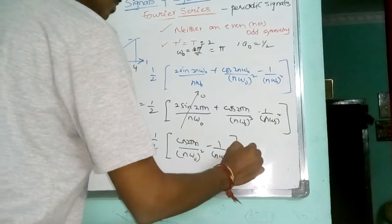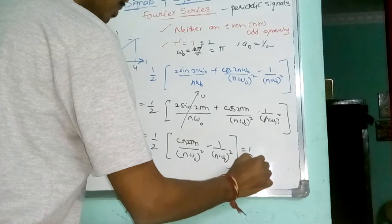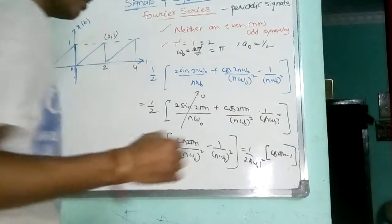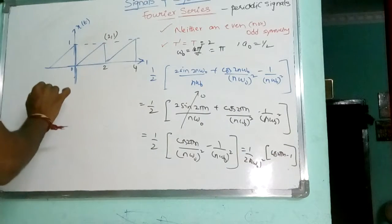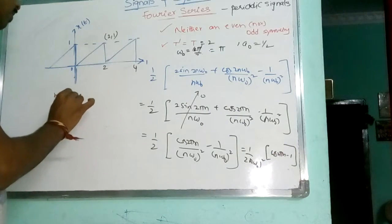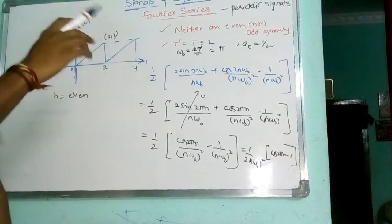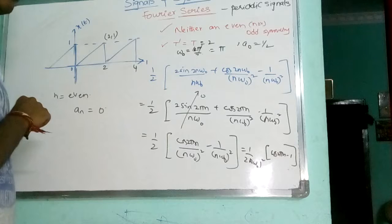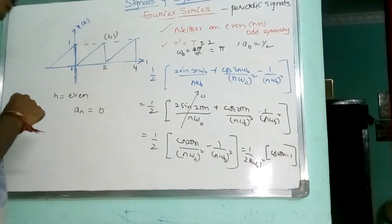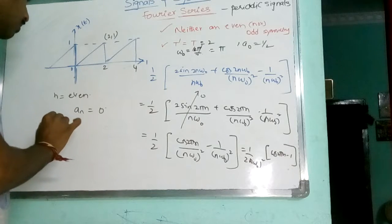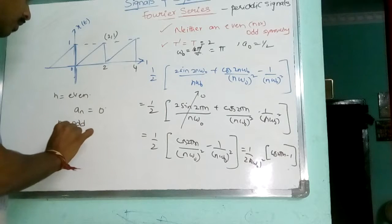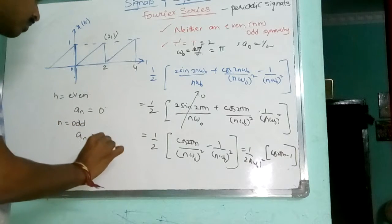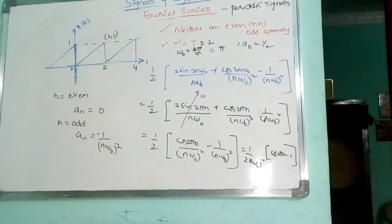So, 1 by 2 into cos 2 pi N by N omega naught whole square, minus 1 by N omega naught whole square. That means I can take: 1 by 2 N omega naught whole square, into cos 2 pi N minus 1. Whenever N is even, cos 2 pi N is even, then A N will be 0. Whenever N is odd, then A N is 1 by N omega naught whole square, minus 1 by N omega naught whole square.